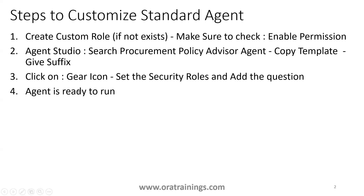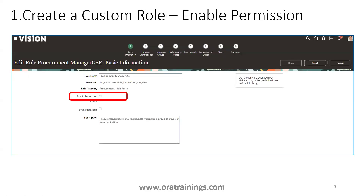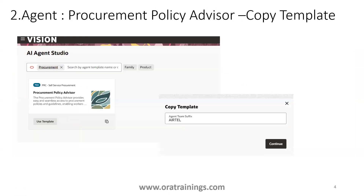This is the first screen I was talking about. When you are opening an existing role or creating a new role, make sure that the 'Enable Permission' button or checkbox is enabled. This is a prerequisite first step. Next, go to Agent Studio and search for the agent you want to copy.